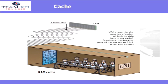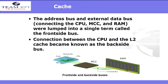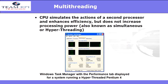So now we've started to complete our picture. We have our RAM, we have our address bus, and now we have the code book — a way to communicate. The cache uses the address bus. The external data bus connecting the CPU, the MCC, and the RAM all together were lumped into a single term called the front side bus. The connection between the CPU and the L2 cache became known as the backside bus.